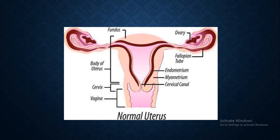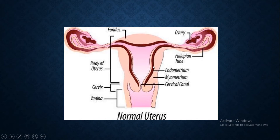For a successful pregnancy to take place, there should be three important processes accomplished. The first is ovulation, which releases the egg cell into the fallopian tube. The second is fertilization, which takes place in the fallopian tube, and eventually the implantation of the zygote into the endometrium, which is the innermost layer of the uterus. If all three processes succeed, the lady will succeed in being pregnant.